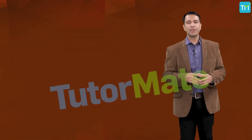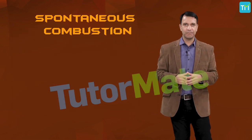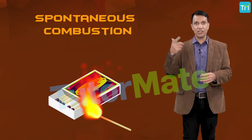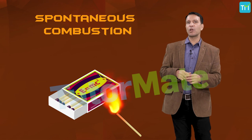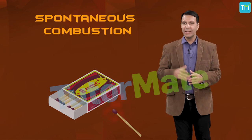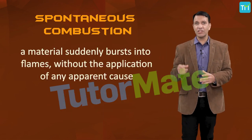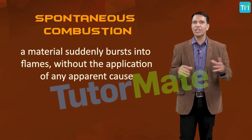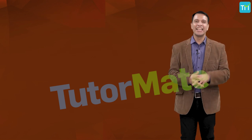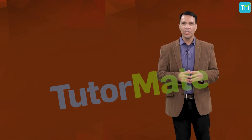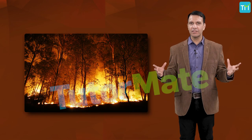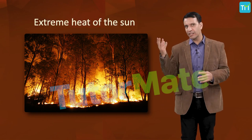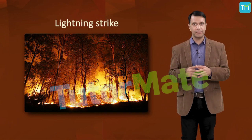Moving on to the next type: spontaneous combustion. If you strike the head of a matchstick on the side of a matchbox, the matchstick lights up. This is an example of spontaneous combustion — the type of combustion in which a material suddenly bursts into flames without the application of any apparent cause. Another example: spontaneous forest fires are sometimes due to the extreme heat of the sun or due to a lightning strike.